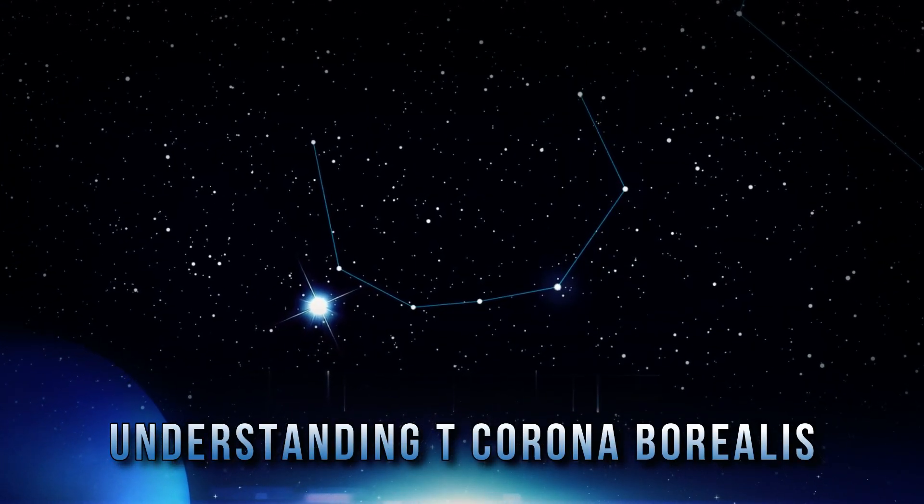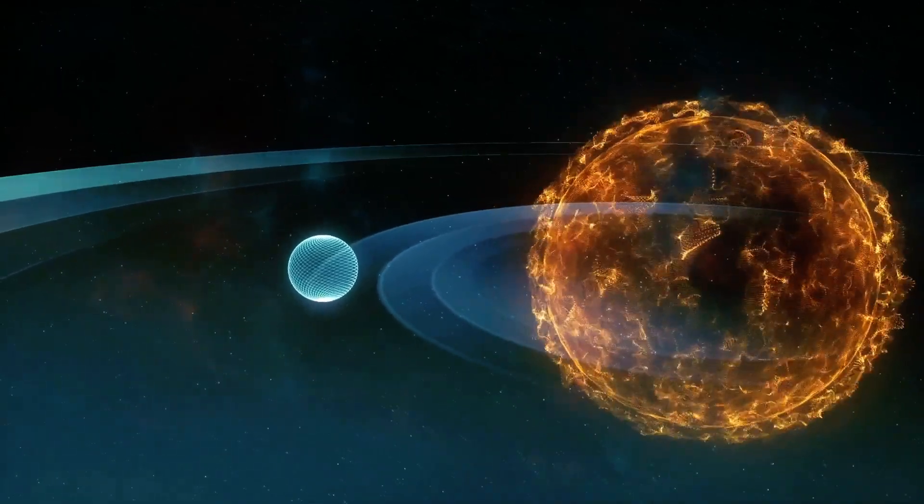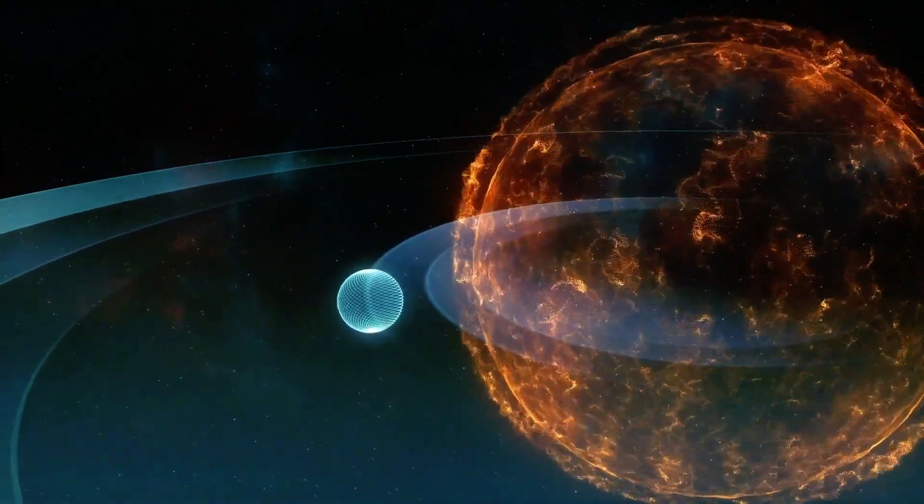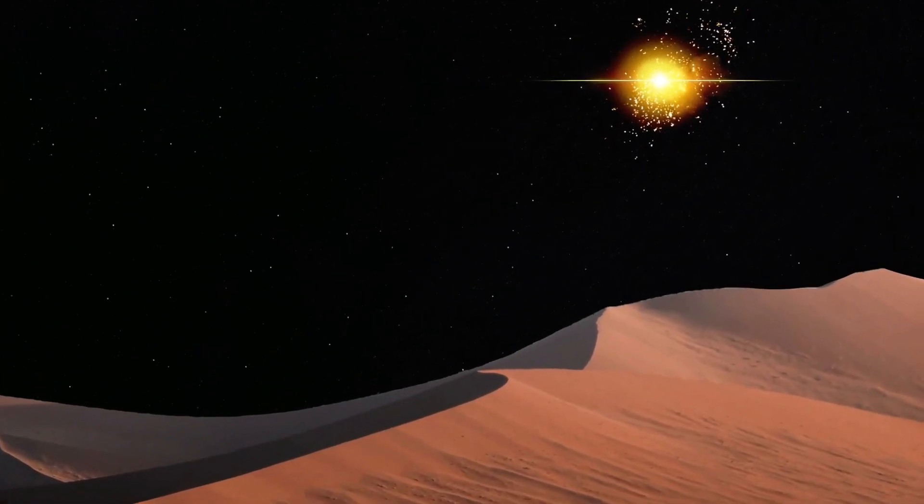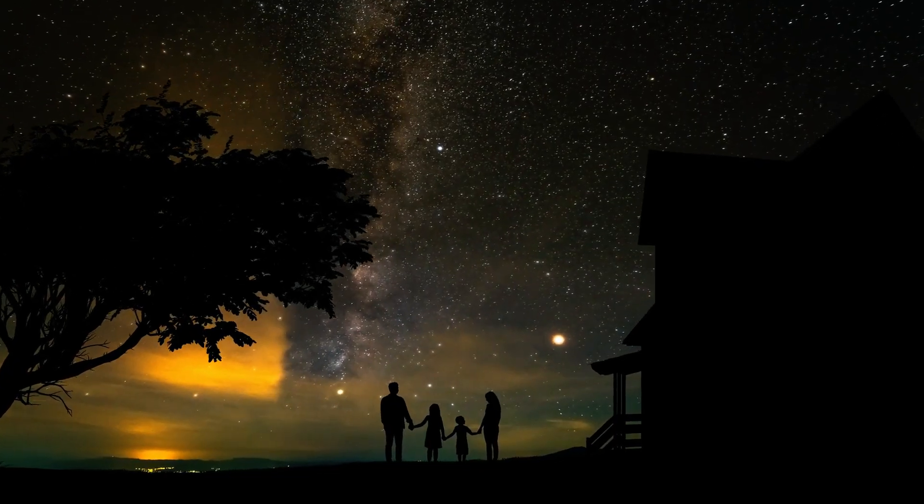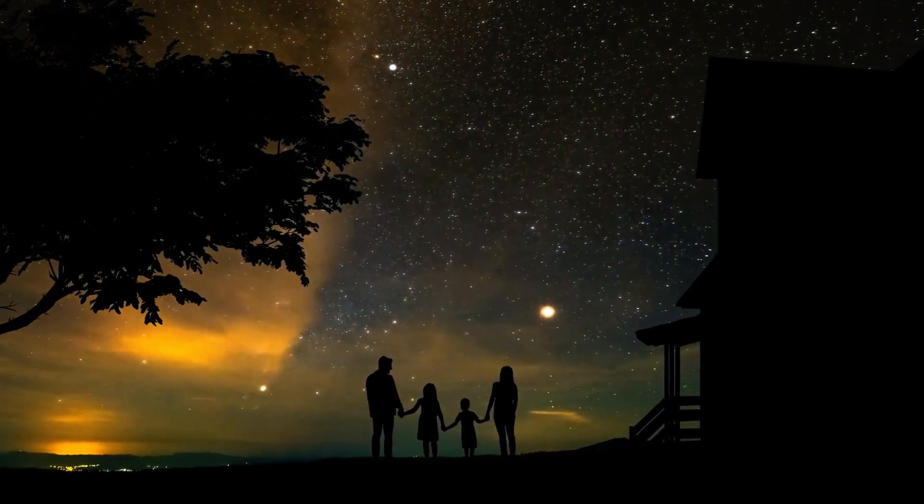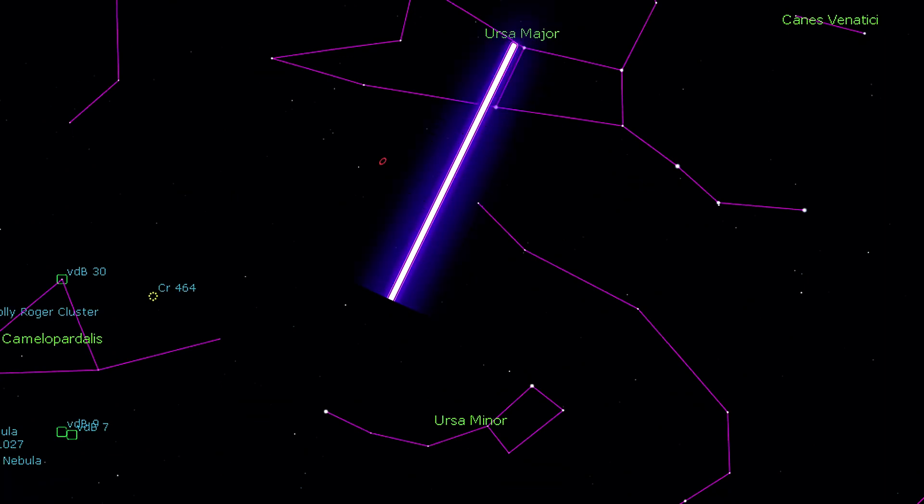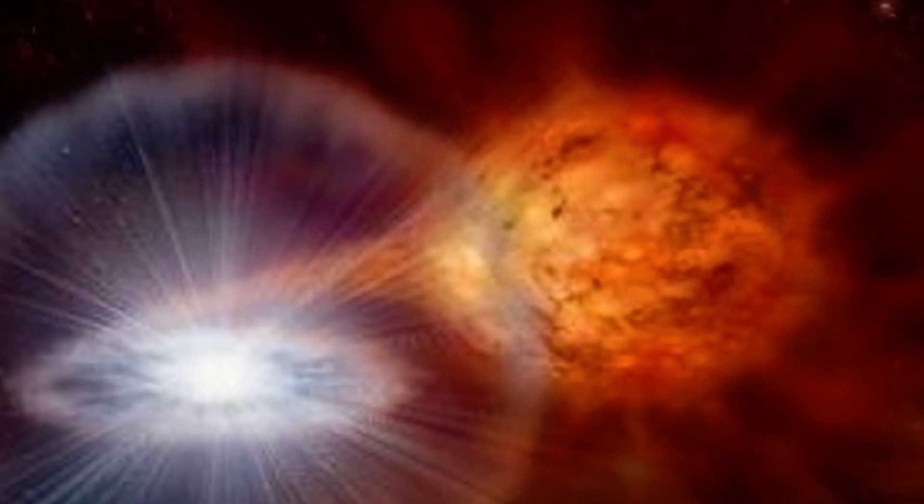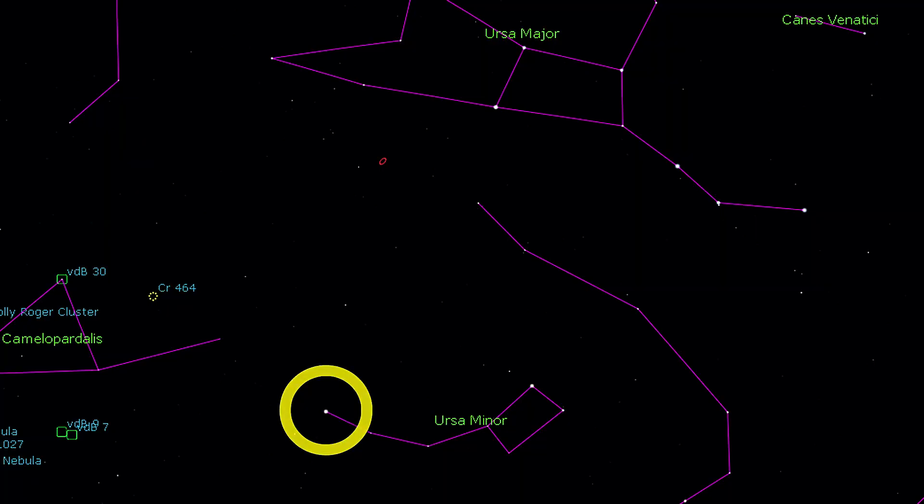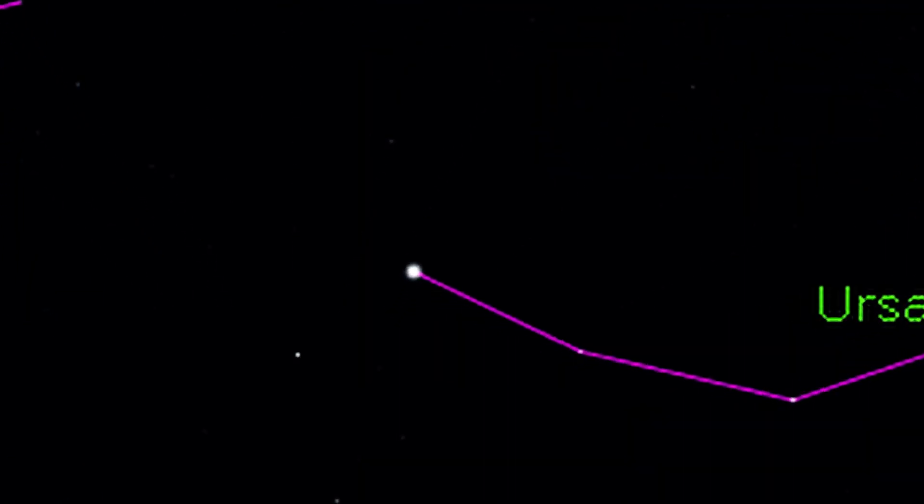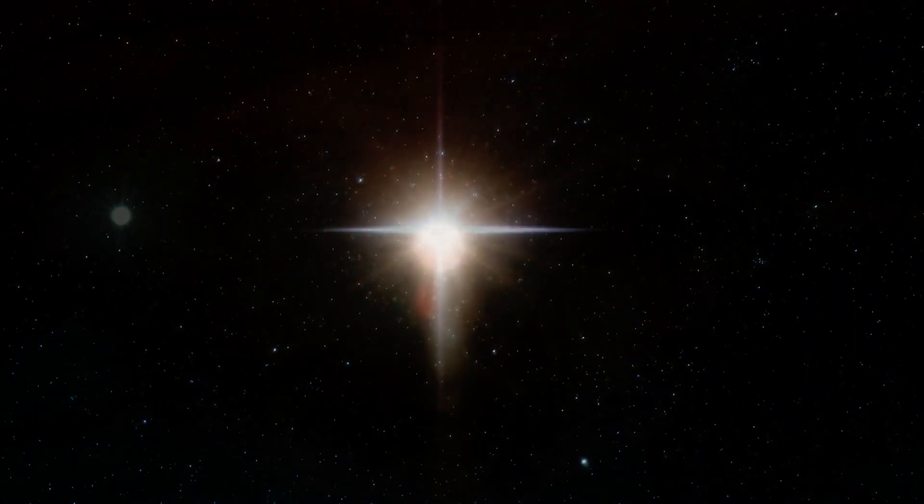Understanding T. Corona Borealis. T. Corona Borealis, often known as TCB, is a remarkable recurrent nova situated approximately 3,000 light-years from Earth. This binary star system features a white dwarf and a companion red giant star that orbit each other roughly every 227.04 days.